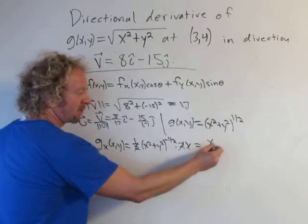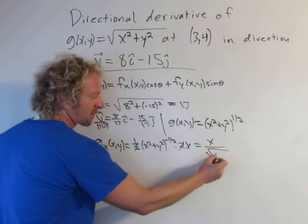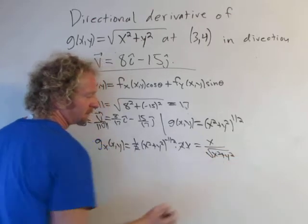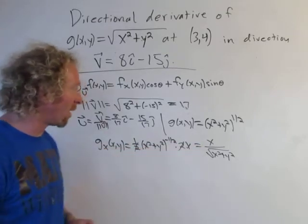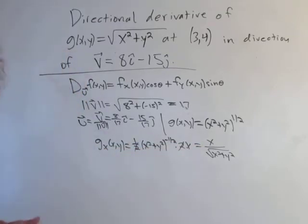You can bring this guy down. So you get x over the square root x squared plus y squared. If you do the partial with respect to y I think it's going to be exactly the same thing except you have a y. So let's go ahead and finish up the problem.